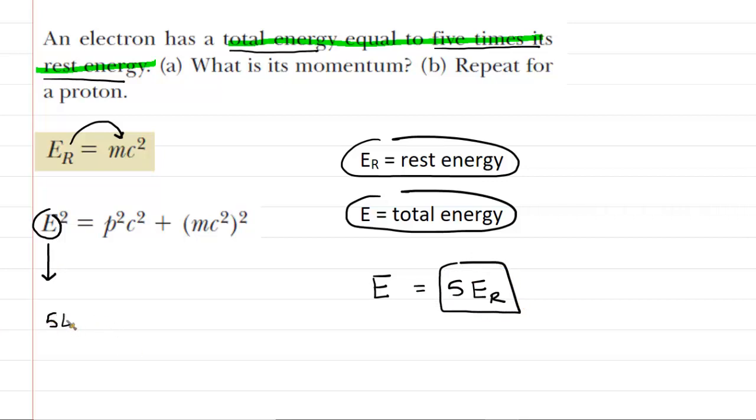So we're going to fill that in for the total energy, we're going to make sure we square it. And then we have momentum squared times speed of light squared plus the term in parentheses, the mc squared. Well, that's just the same thing as the rest energy. So we're going to actually fill in E sub R right there, and then square it.